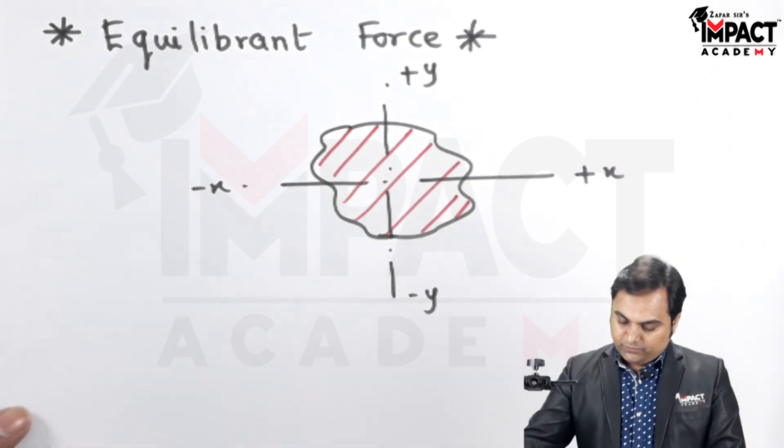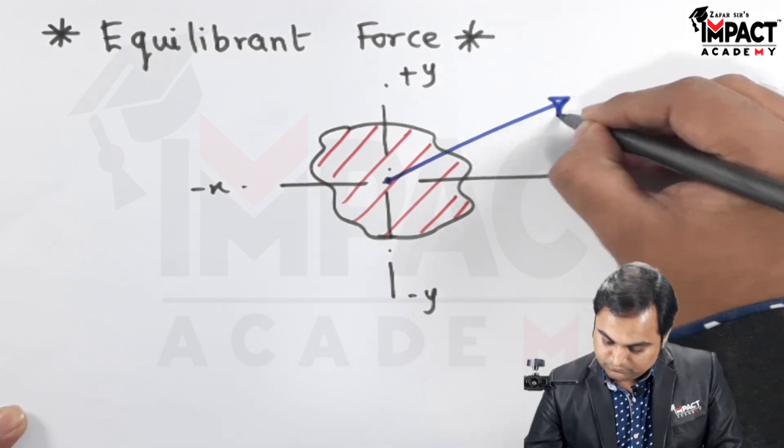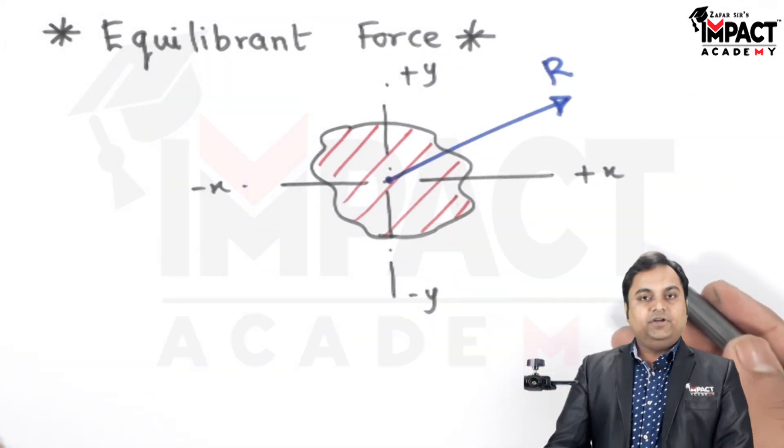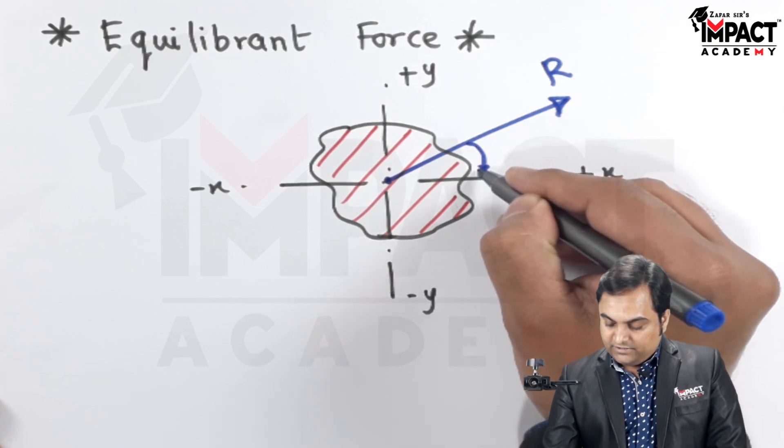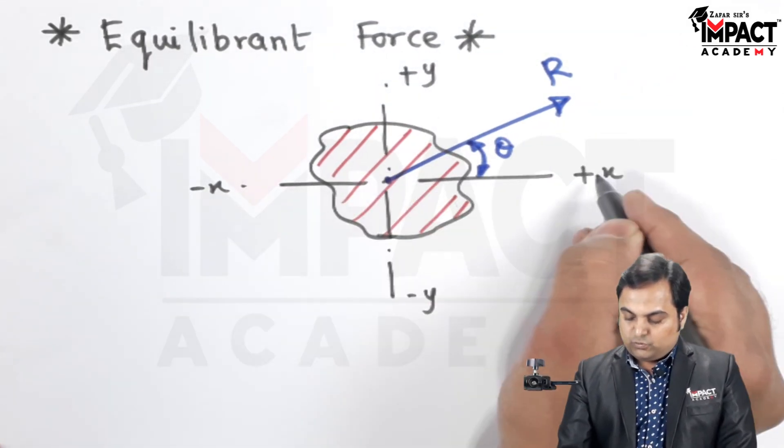I am indicating it with the help of this line that here is the resultant force having an angle theta with respect to horizontal and acting in the first quadrant.